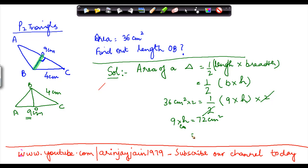Therefore, the height is equal to 72 divided by 9, which equals 8 centimeters.